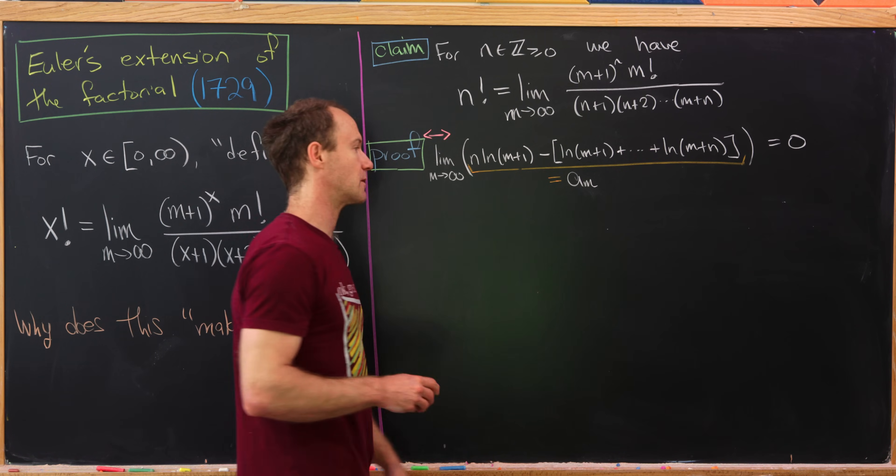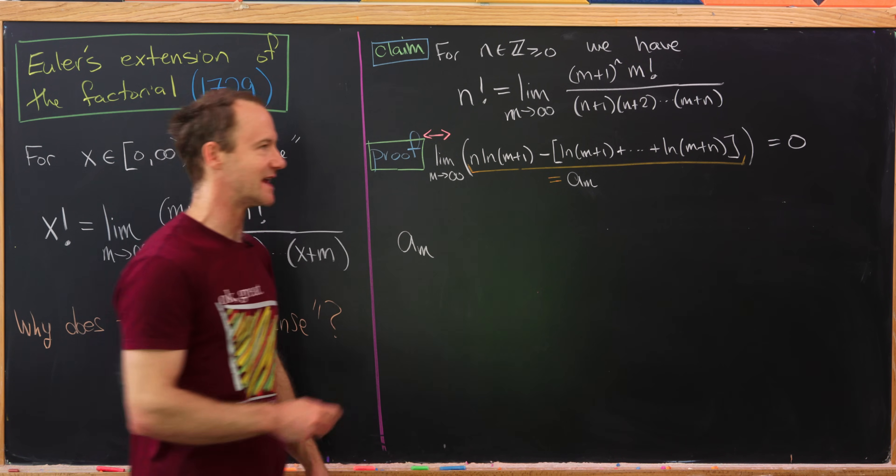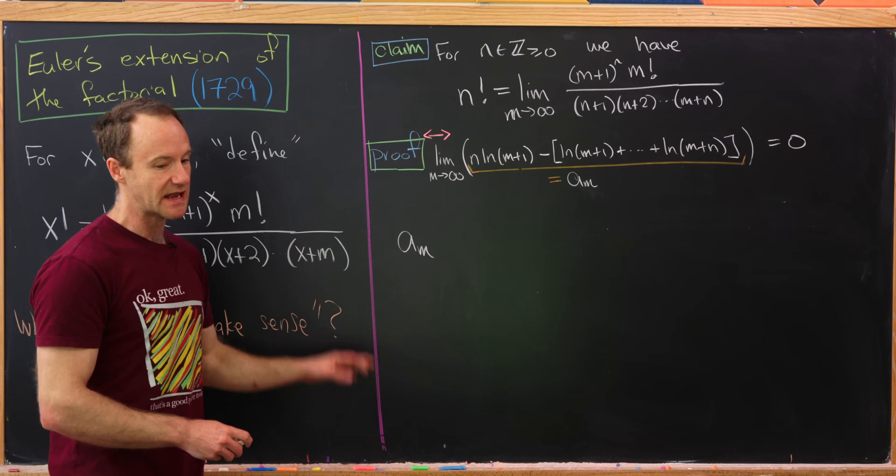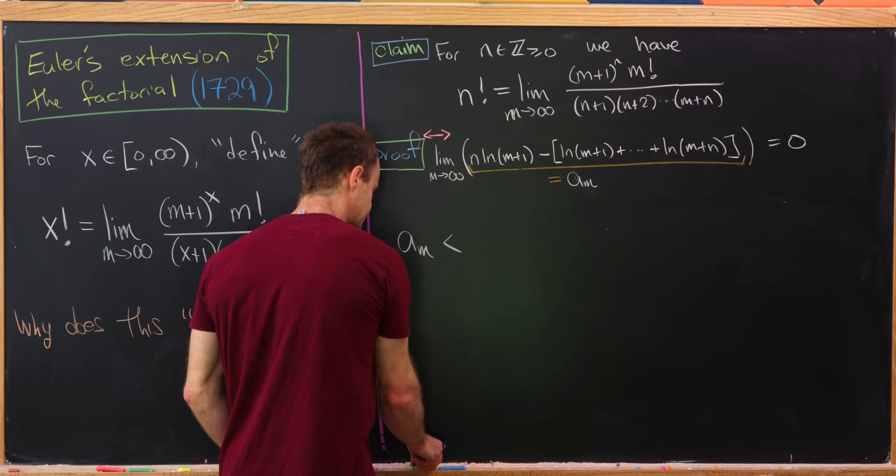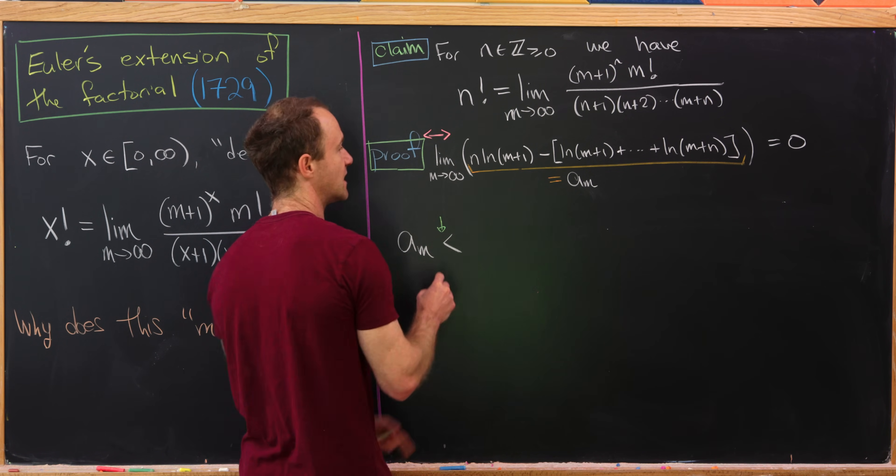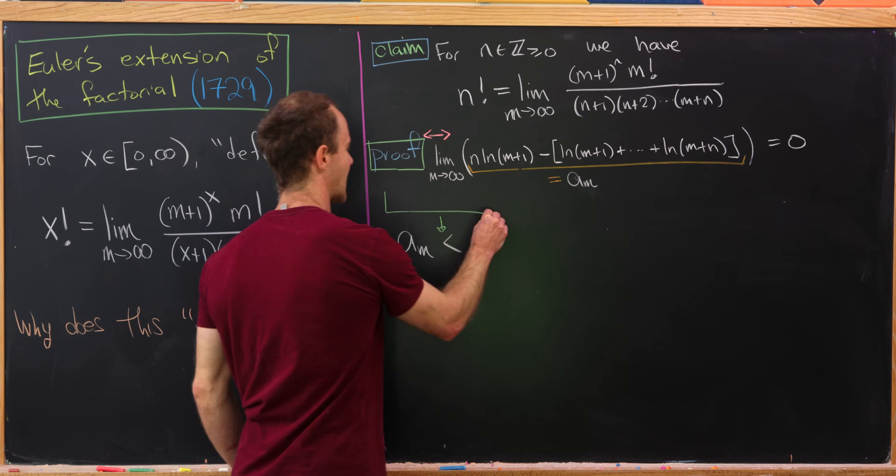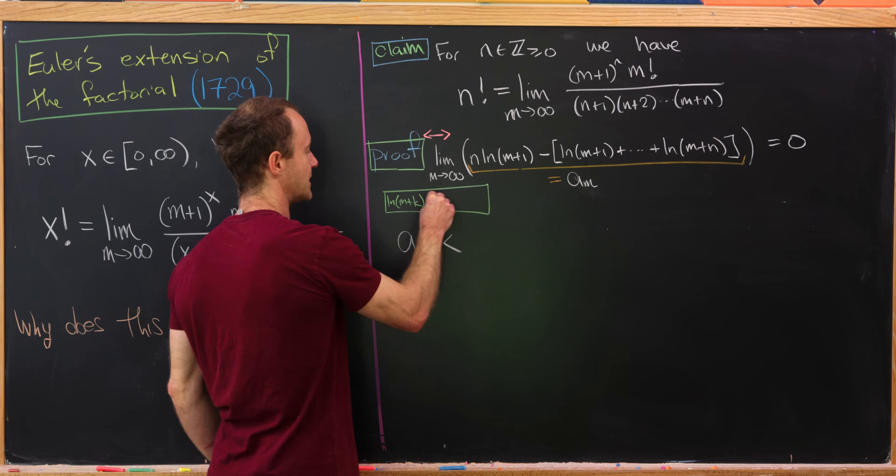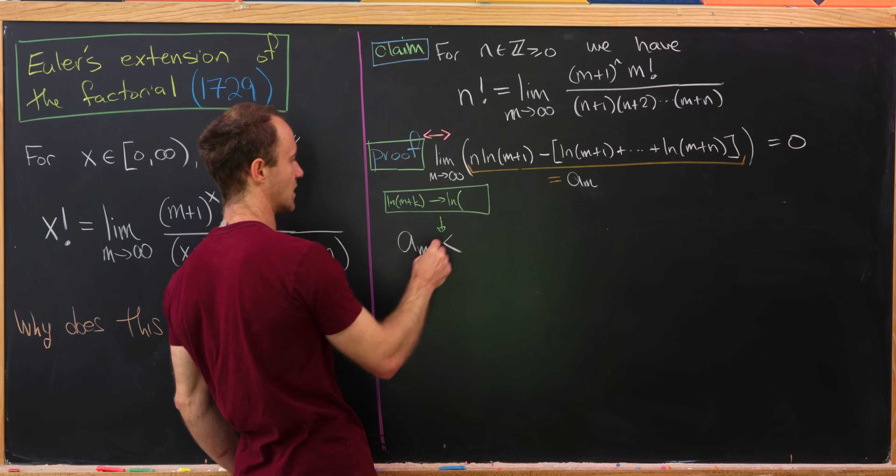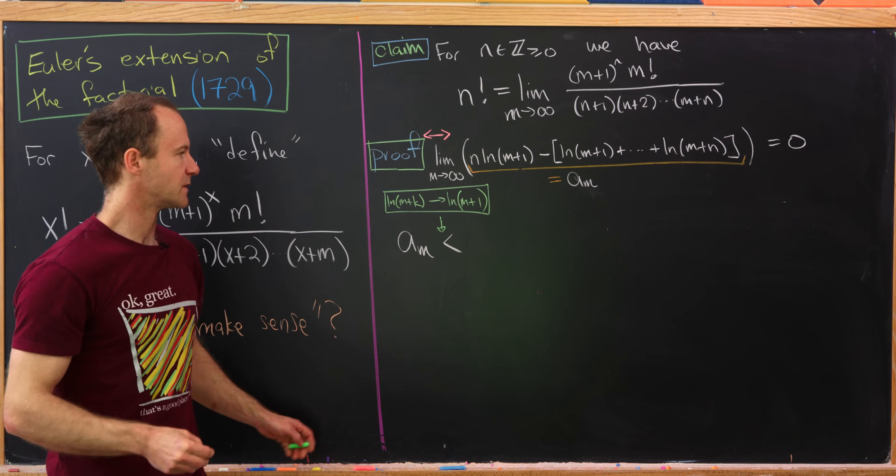Okay, and now I'm going to start building an inequality. So our first inequality will start with a_m here, and now we'd like to build something bigger. So the way that we'll build something bigger here is make replacements in this term over here. So in fact what we'll do is replace everything of the form ln(m+k) and I'll replace all of those with ln(m+1). Okay great.